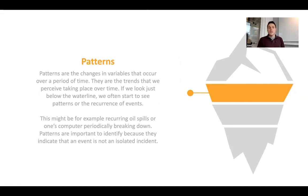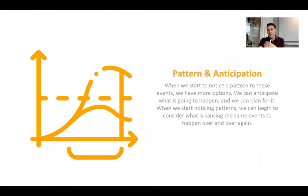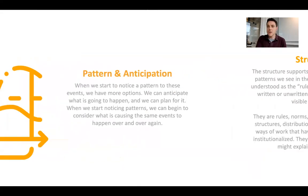Below that are the trends and the patterns — what's happening over time. Are things going up or going down? What sort of patterns do we see over time? This might be recurring oil spills: there might have been one five years ago, and one a couple of years before that, and they seem to be getting more frequent. These are important to identify because they indicate that an event is not an isolated incident. When we identify patterns, we can start to anticipate them, think strategically about how to adapt, how to mitigate them. This is a lot of what we do in management — plan, predict, and anticipate — but again it's not going to change that system.